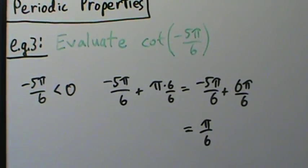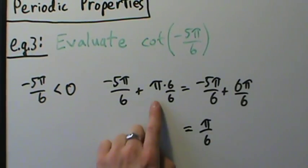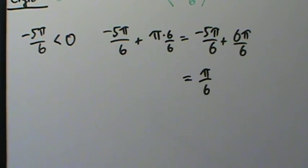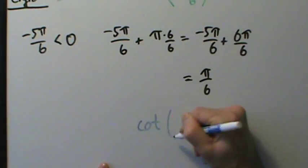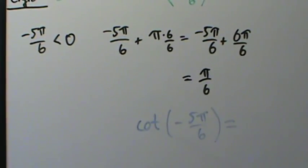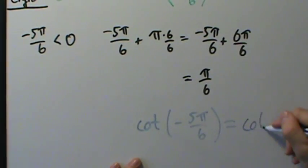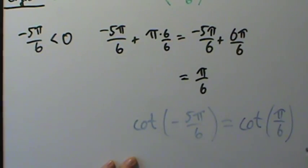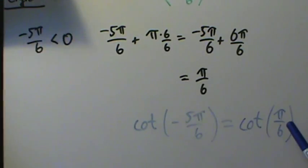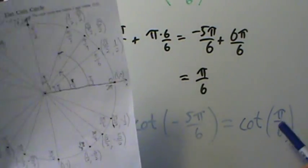So negative 5π over 6 plus π equals π over 6. By the periodic properties of cotangent, cotangent of negative 5π over 6 equals cotangent of π over 6. Is π over 6 between 0 and π? Yes — it's positive and less than π, so π over 6 is a valid special angle on the unit circle.